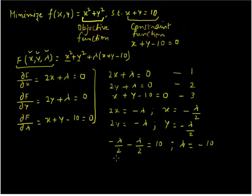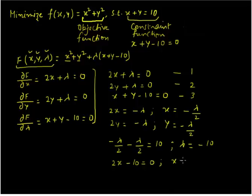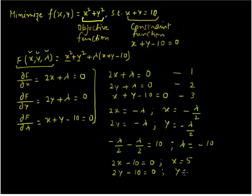Once we know the value of lambda, we can find x and y by substituting lambda into equations 1 and 2 respectively. From equation 1: 2x minus 10 equals 0, which gives x equal to 5. Similarly, from equation 2: 2y minus 10 equals 0, giving y equal to 5. So we have minimized the objective function subject to the constraint, and found x, y, and lambda.